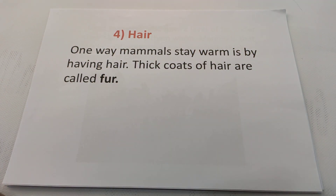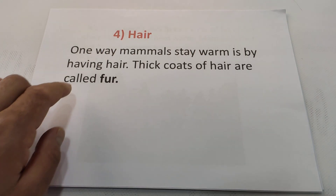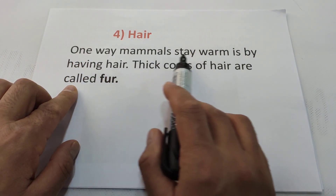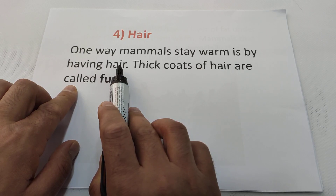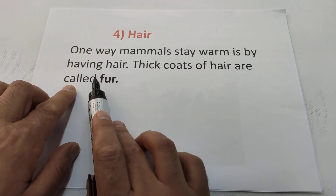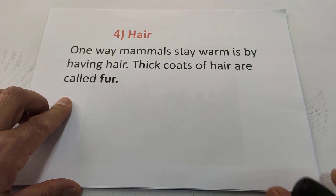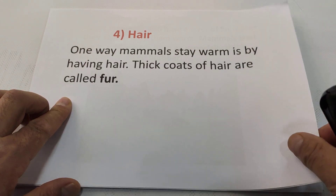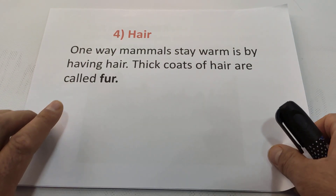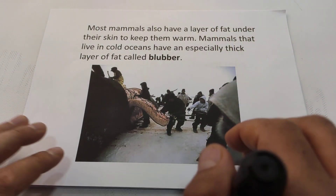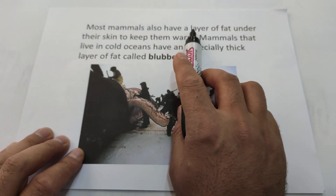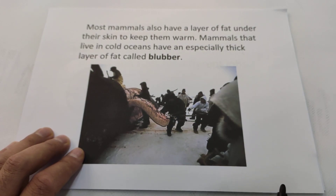The fourth characteristic of mammals is that they have hair. One way mammals stay warm is by having hair. The thick coats of hair provide cold protection. Most mammals also have a layer of fat under their skin to keep them warm.